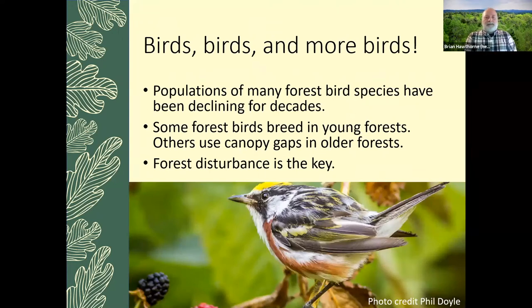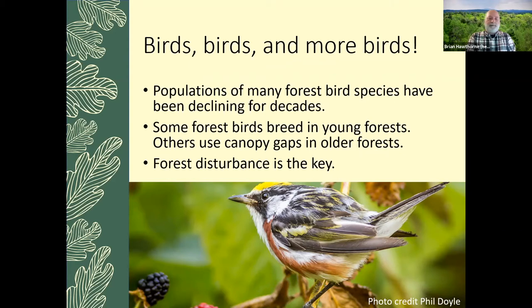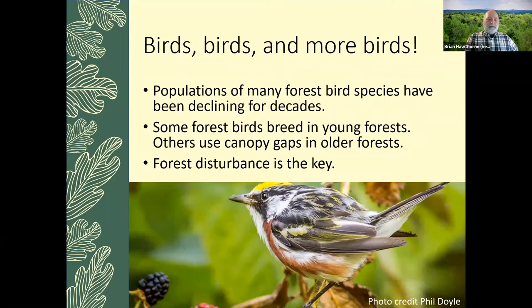Everyone always talks about birds in forests, and in general, populations of many forest bird species have been declining for decades. For example, the chestnut-sided warbler has been declining primarily because of lack of young forest and lack of canopy gaps in older forests. As with regenerating oak trees, forest disturbance is the key — getting light to the ground is the most important thing.